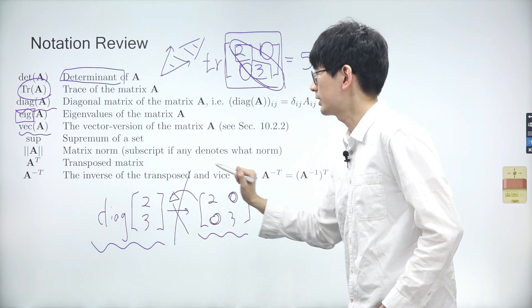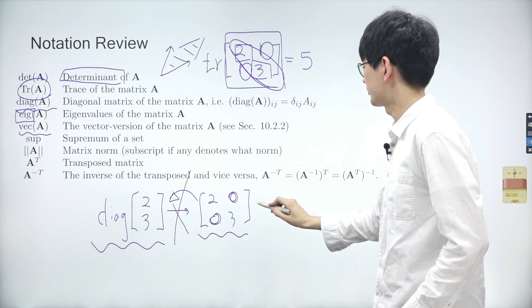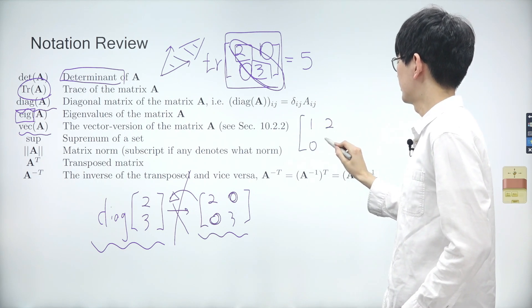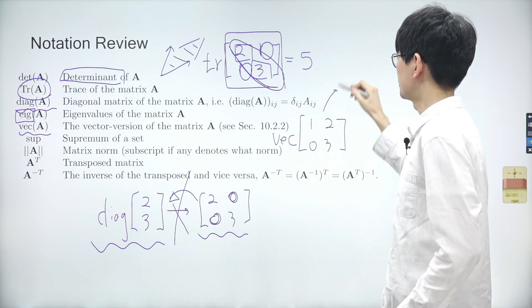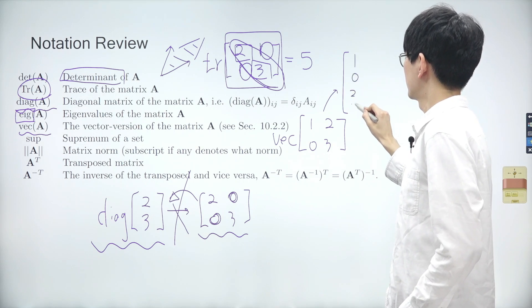Vectorization is different from transferring a matrix into a vector with a diagonal operator. I'll give you an example with a new matrix containing the values 1, 2, 0, and 3. The result of vectorizing the matrix is a vector with these values arranged in a column.